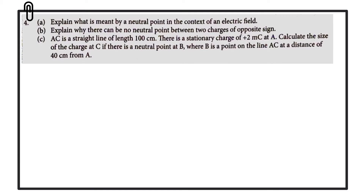In this video we're going to look at a calculation involving the neutral point of an electric field. For part A: explain what is meant by a neutral point in the context of an electric field. A neutral point is a point where the electric field strength — or the resultant electric field strength — is zero, also referred to as where the electric field intensity is zero.